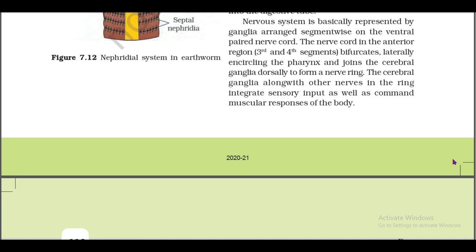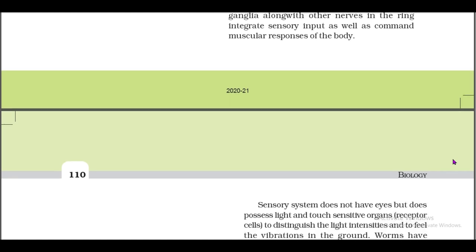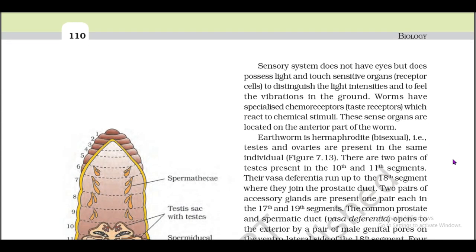The nervous system is represented by ganglia arranged segment-wise on the ventral paired nerve cord. The nerve cord in the anterior region (third and fourth segments) bifurcates laterally, circling the pharynx, and joins the cerebral ganglia dorsally to form a nerve ring. The cerebral ganglia along with other nerves in the ring integrate sensory input and command muscular responses. The sensory system does not have eyes but possesses light- and touch-sensitive organs and receptor cells to distinguish light intensities and feel vibrations in the ground. Worms have specialized chemoreceptors (taste receptors) which react to chemical stimuli.